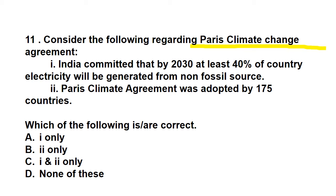Question eleven: consider the following regarding the Paris Climate Change Agreement — important for UPSC exams. India committed that by 2030 at least 40% of the country's electricity will be generated from non-fossil sources — true, as Prime Minister Modi committed this, driving a surge in solar power plants. However, the Paris Climate Agreement was adopted by 185 countries, not 175. So the correct answer is A, statement one only.